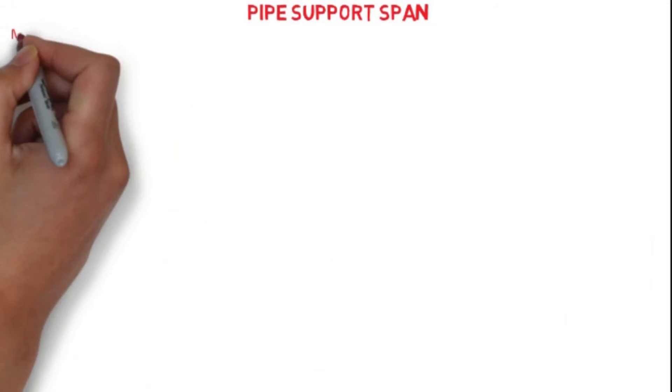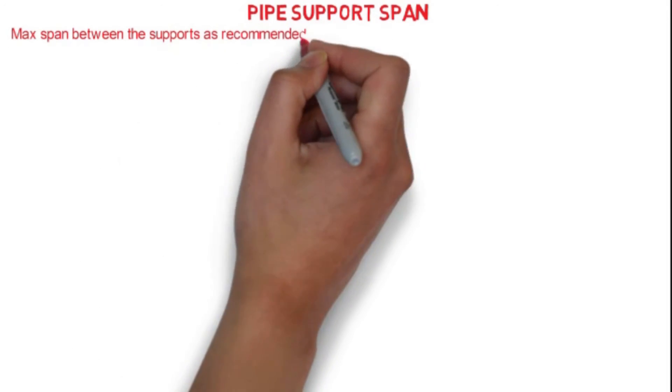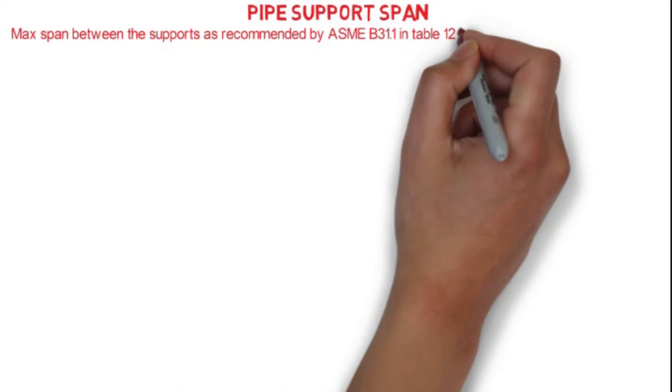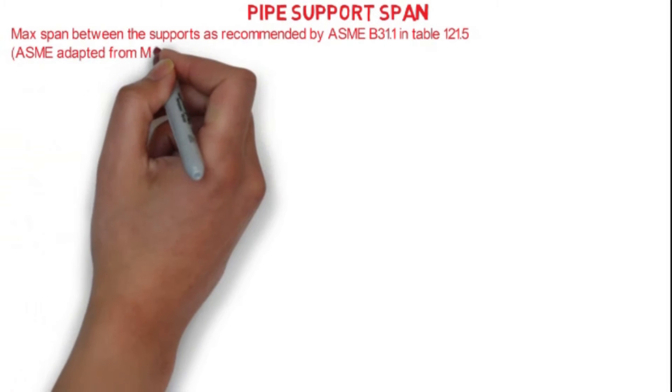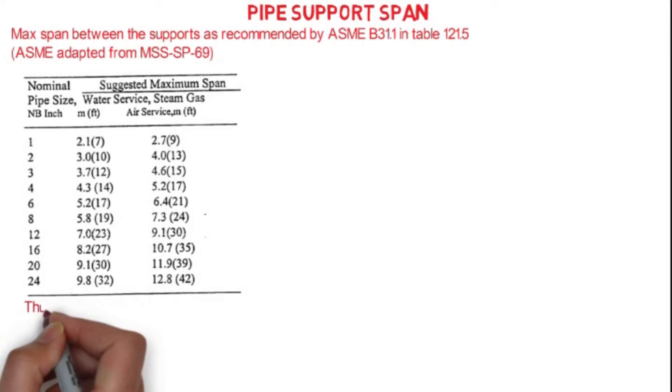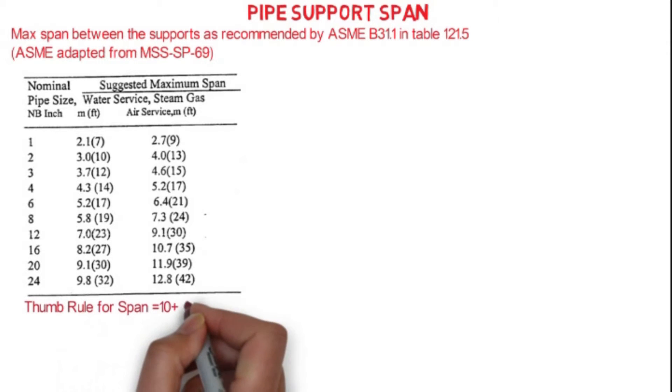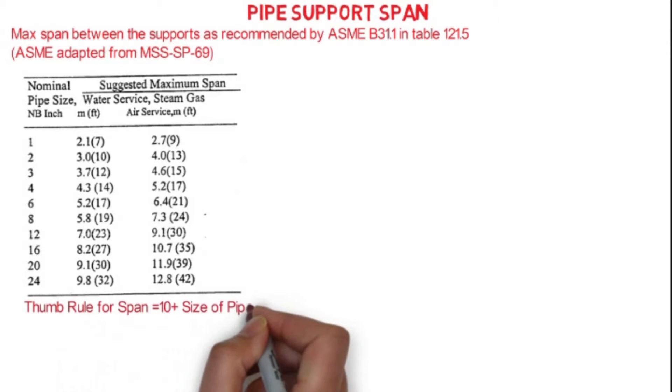Here the suggested maximum span between the supports are recommended by ASME B31.3, which is adapted from the manufacturing standard MSS SP-69. There is one thumb rule for calculating the span between the support: that is 10 plus pipe size divided by 5 in inches, which gives you span between the supports.